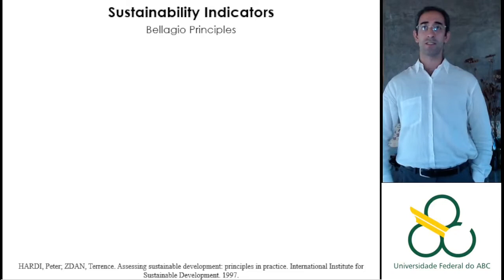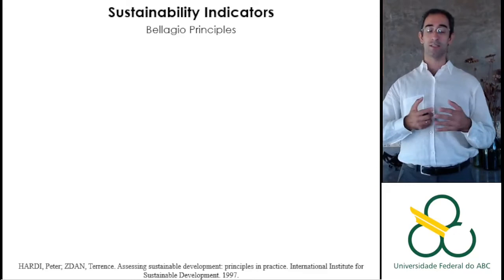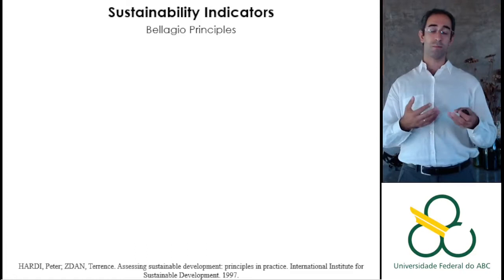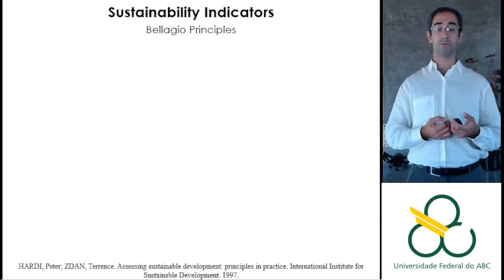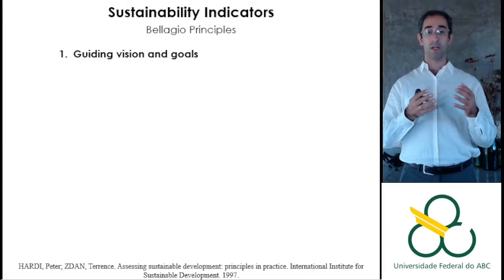In 1997, a group of researchers at the International Institute for Sustainable Development joined together and, in a long project reviewing many previous experiences of sustainable indicators, proposed some principles that would be important when thinking about sustainability indicators. First, they should provide a guiding vision and goals — like what do we want for our future, what do we want to achieve?